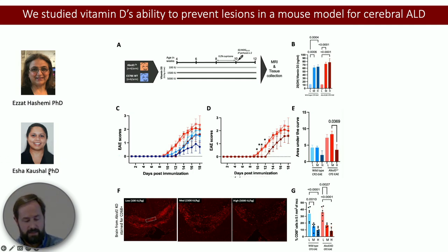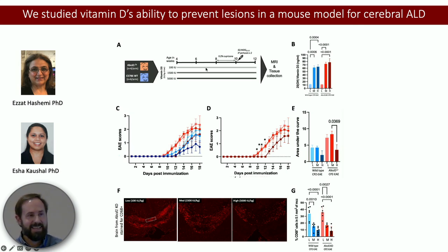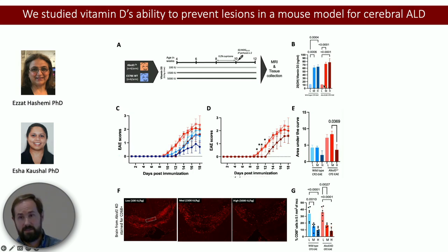Dr. Kaushal ran this set of experiments in the model using vitamin D. She essentially started the baby mice on vitamin D very early — a few weeks of life — and treated them effectively through their first ten mouse-years of life with vitamin D, then induced the brain lesions around that time. The mice had very different vitamin D levels. This is at the very least a very good model for vitamin D deficiency — the mice who got low levels had very low vitamin D in the blood.